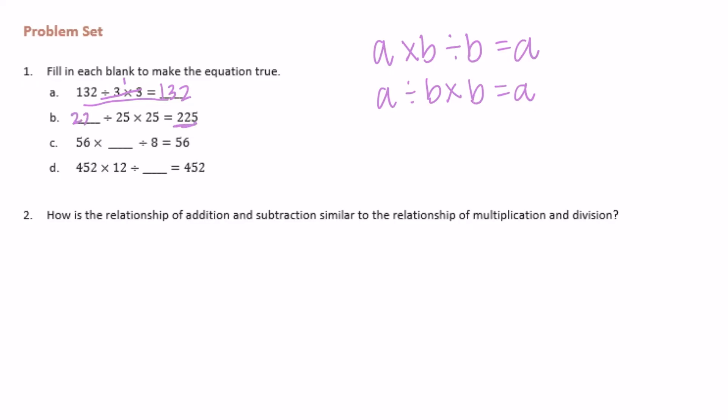56 times what divided by 8 is equal to 56. We want to end up with 56 at the end, but we divided it by 8, so to counteract that we have to multiply it by 8.